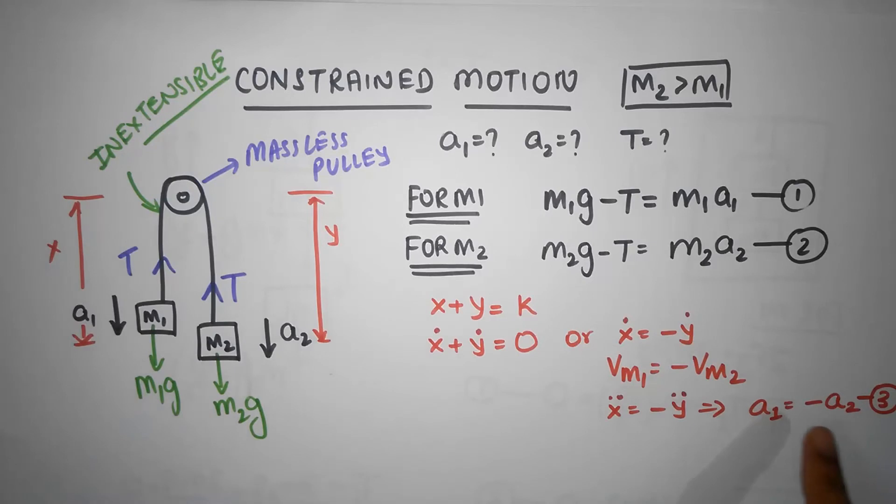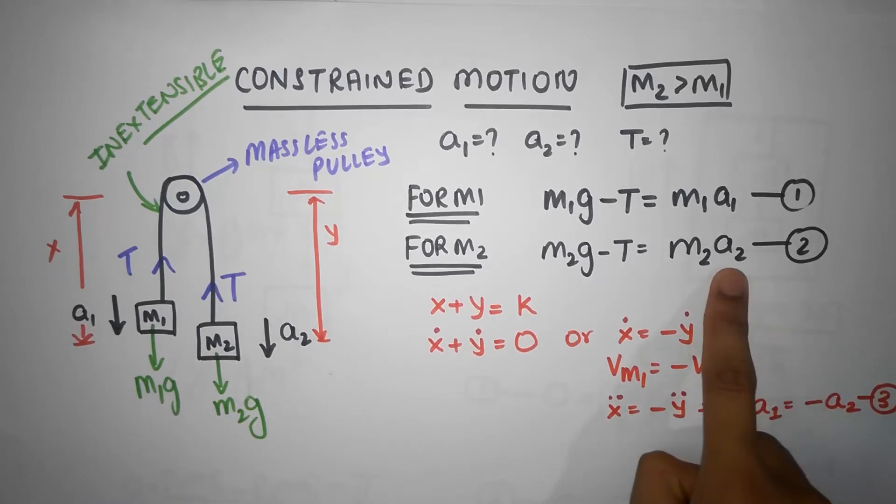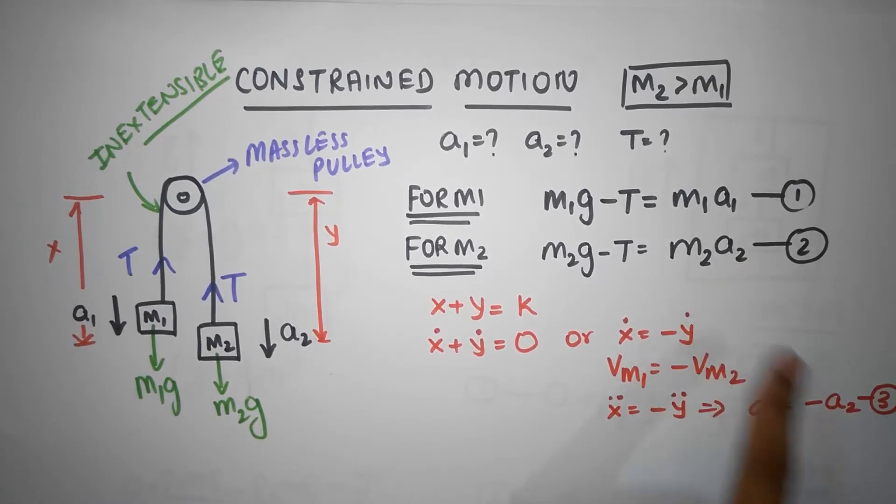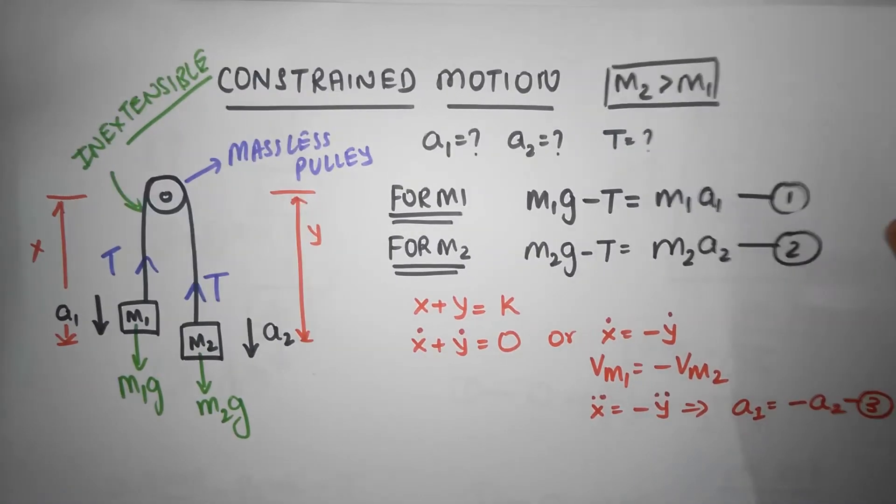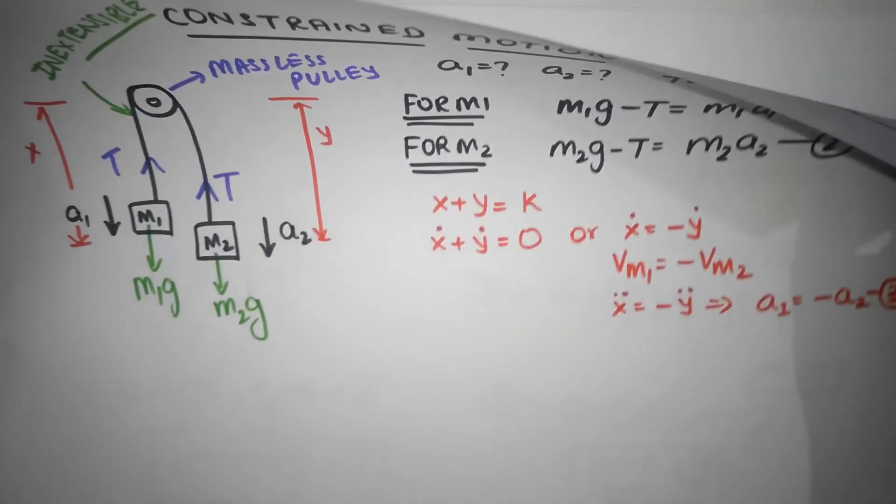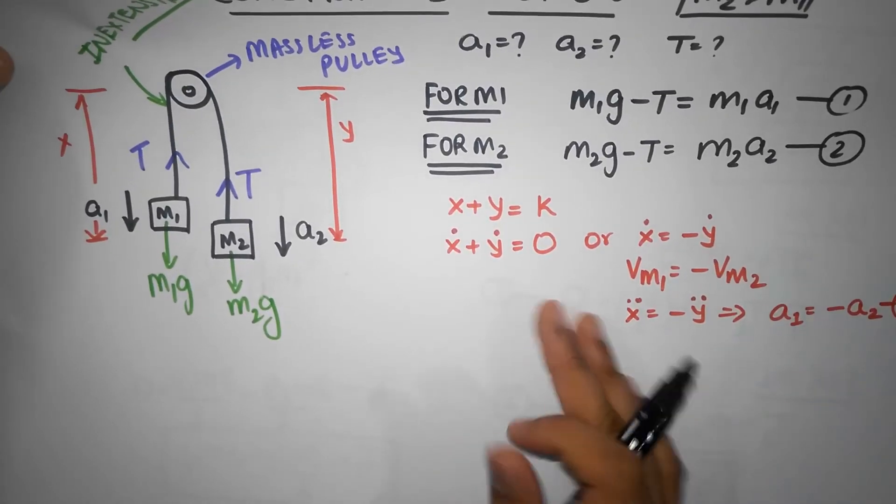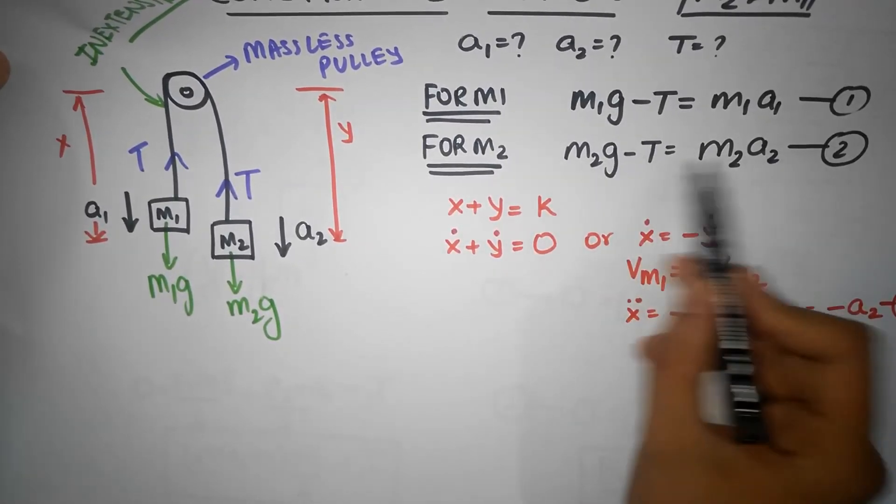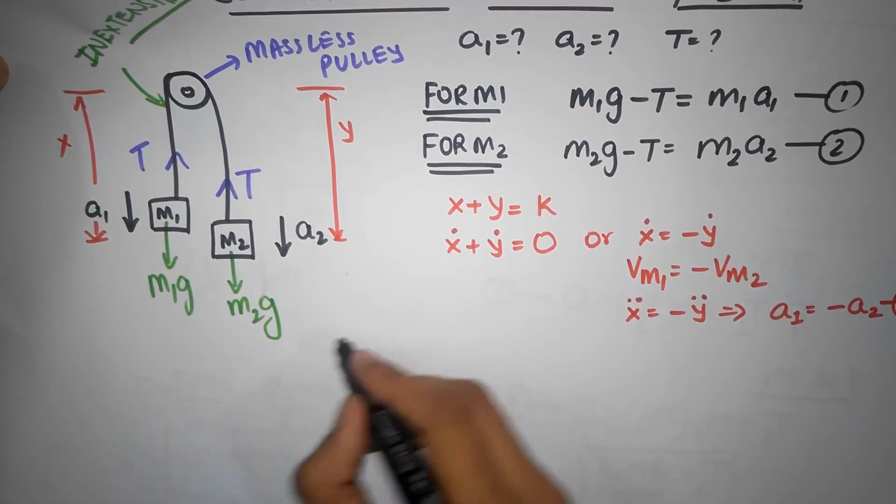So what we can now do is we can substitute this over here. So I'm going to substitute A2 as minus a1 and I'm going to solve this now. I'm just going to move this up a little bit. So we have this guy and this equation. I'm going to write the first equation again.